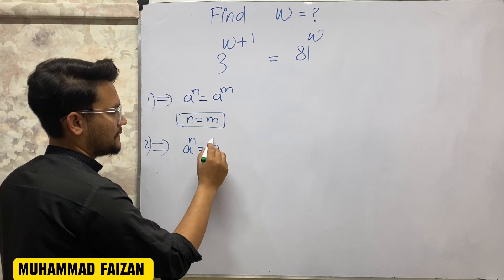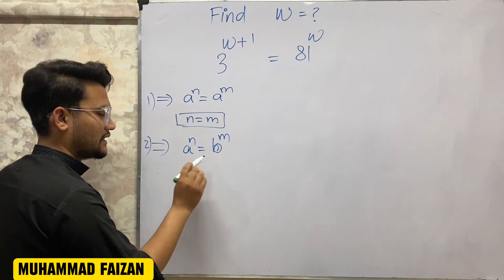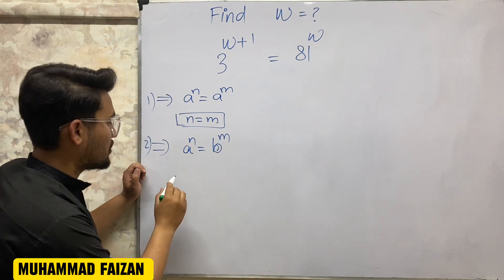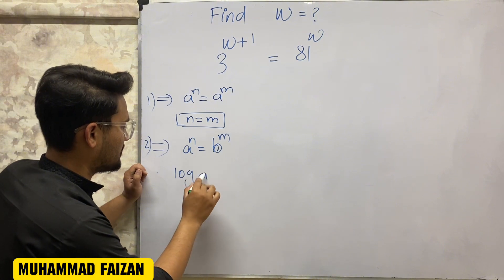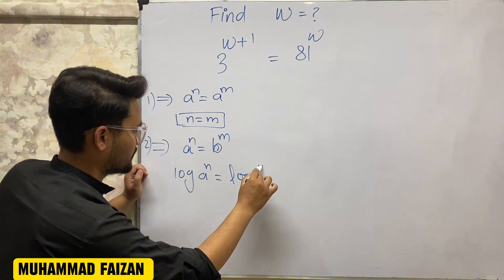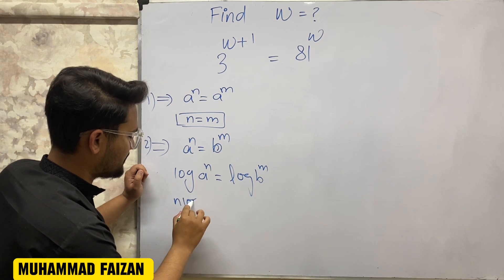For example, A to the power n and B to the power m - there are different bases. So log A power n is equal to log B power m, which means n log A is equal to m log B.